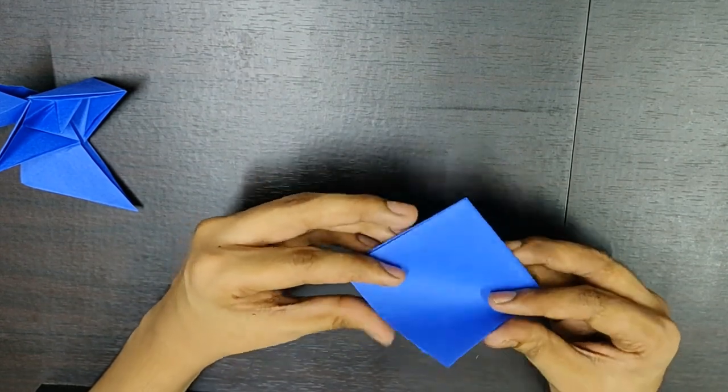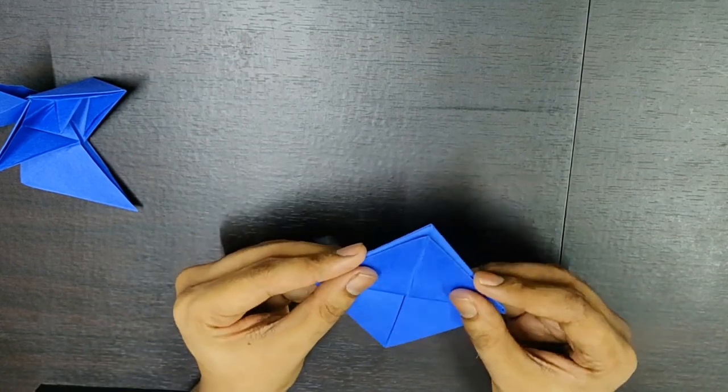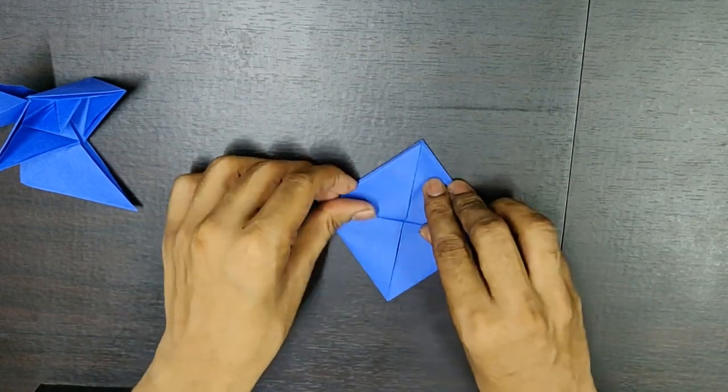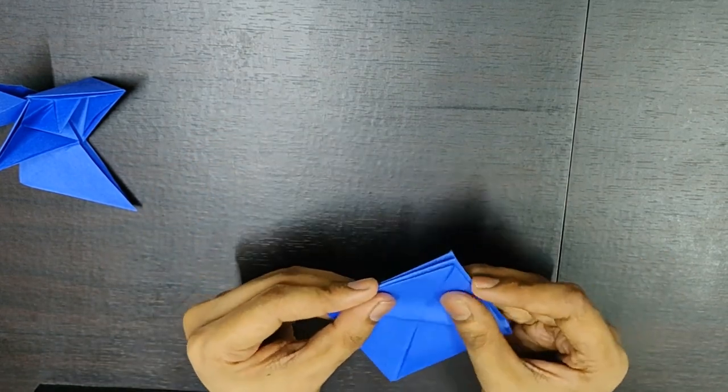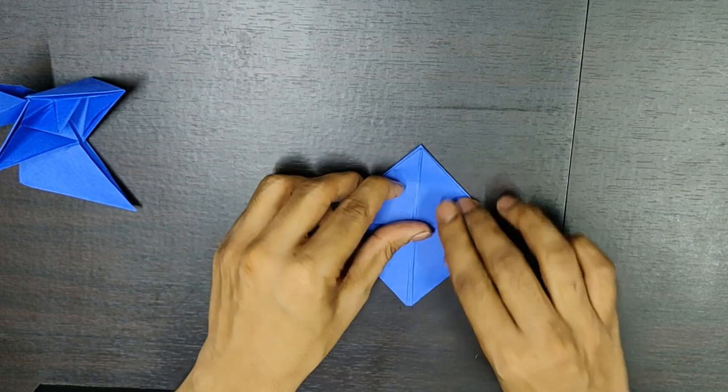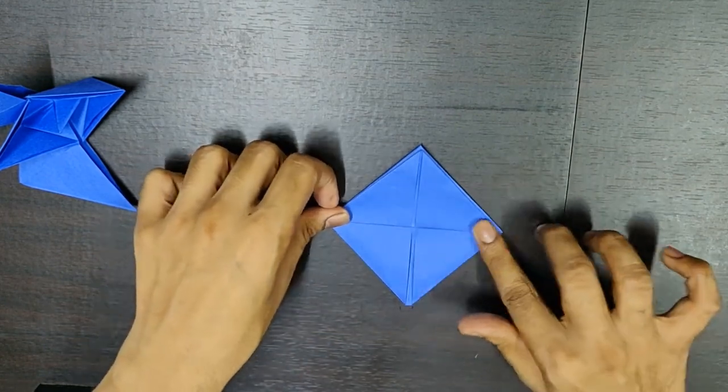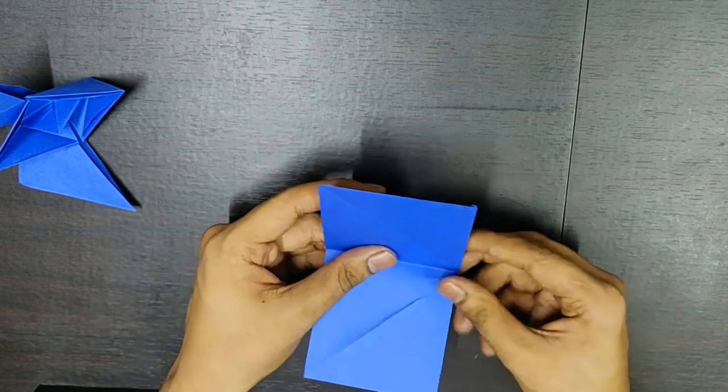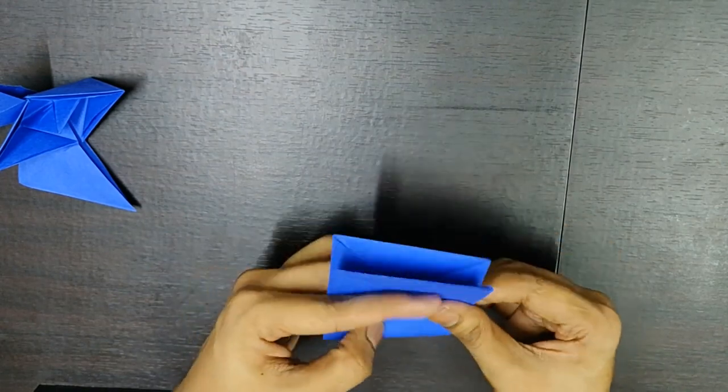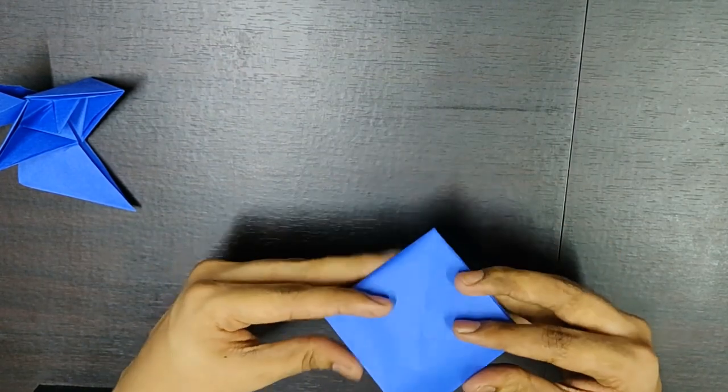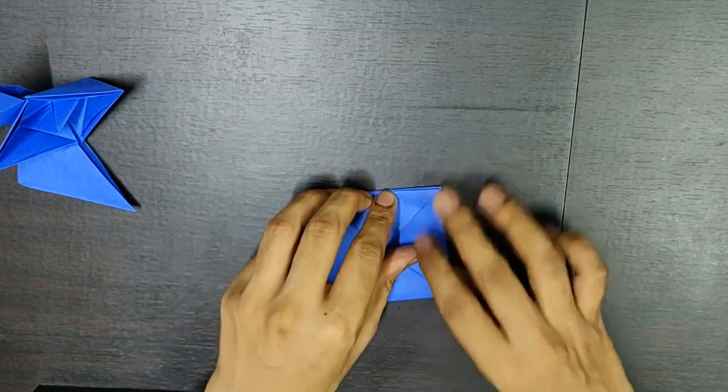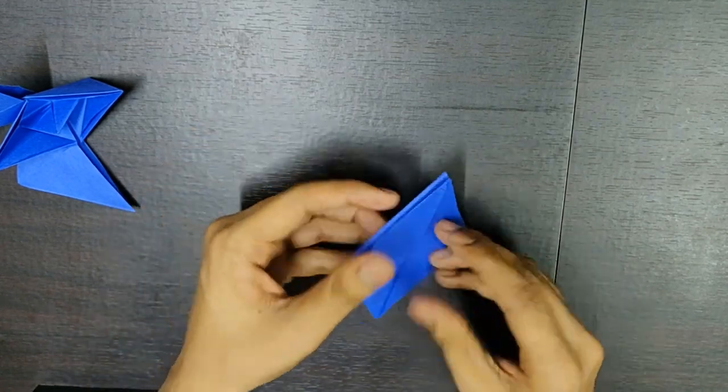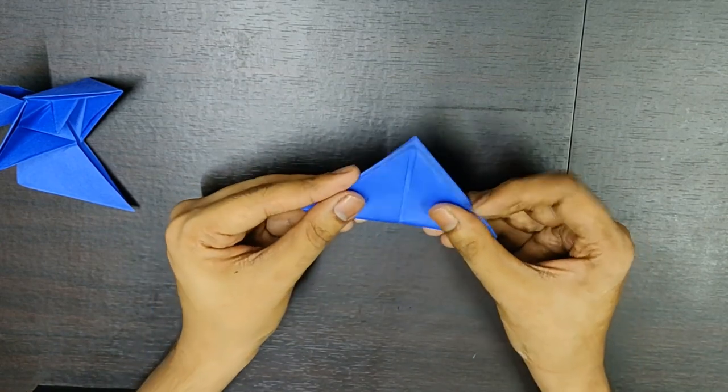You need to repeat the same steps again. So, first, you fold the last flap on this side. And similarly, on this side. Again, you open it up. Fold it inward. And repeat the same steps. One flap here. And one flap here.